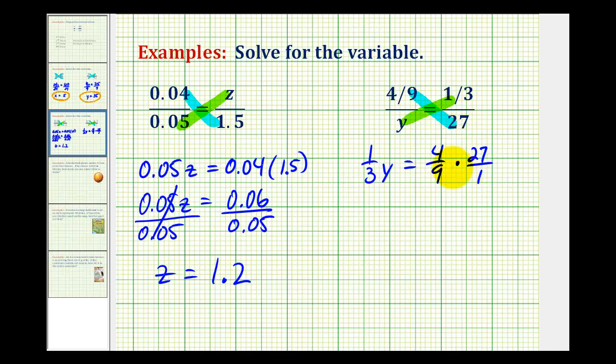Let's determine this product. Notice that nine and 27 have a common factor of nine. There's one nine in nine and three nines in 27. So this becomes one third y is equal to, we'd have 12 over 1, or just 12.